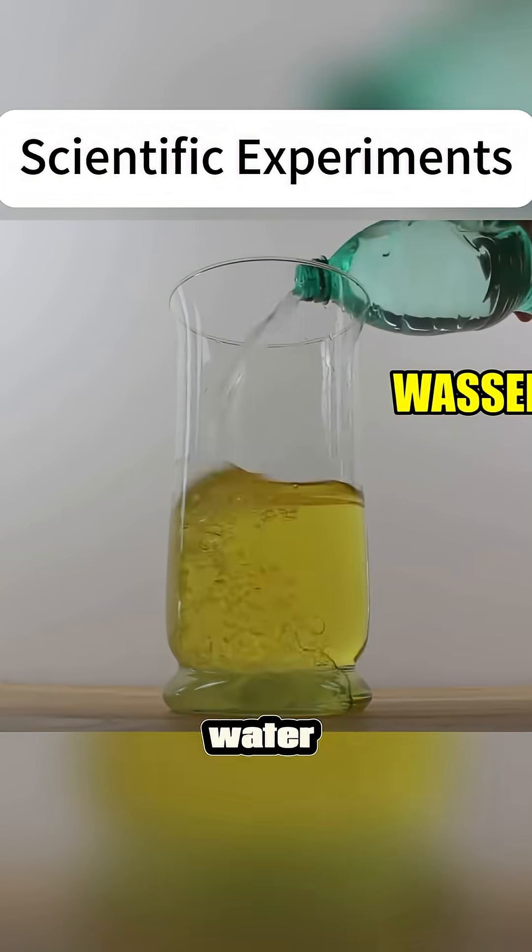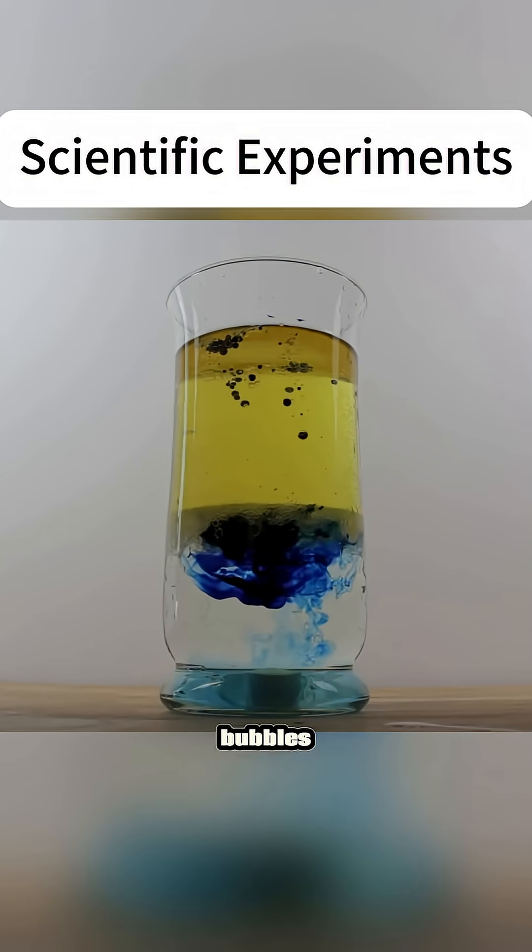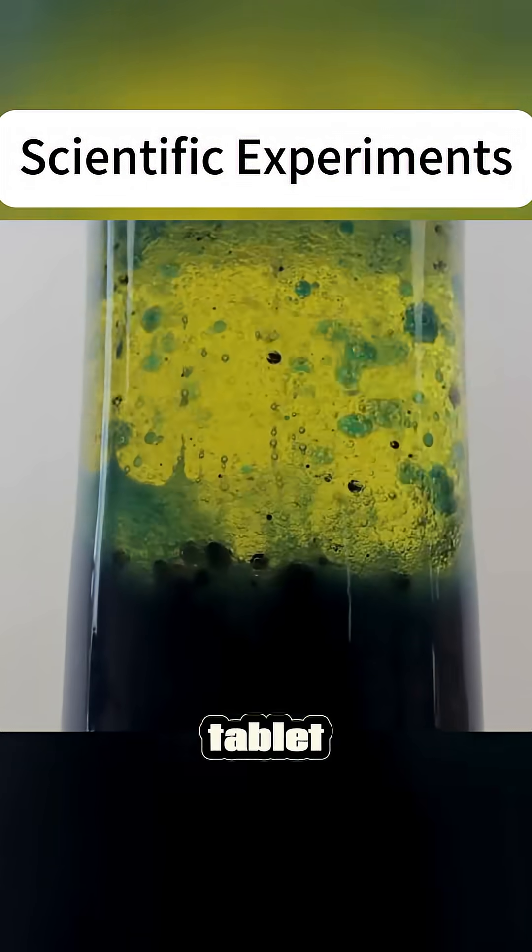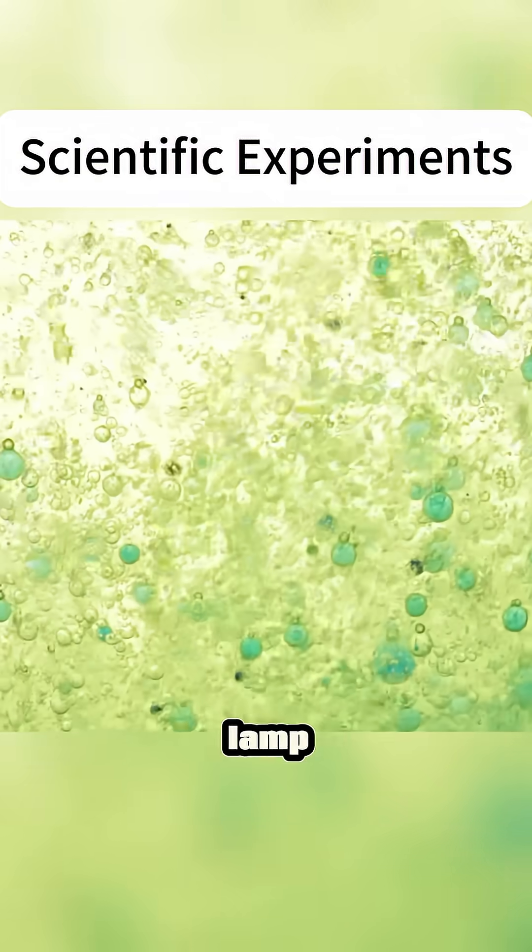In an empty cup, pour in oil, water, and food coloring separately. Then drop in an effervescent tablet. The bubbles produced by the dissolving tablet carry the food coloring and oil up and down in the water, creating a mini lava lamp effect.